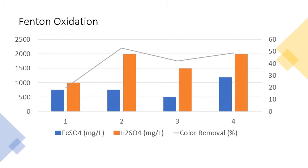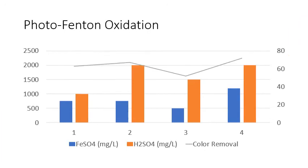For color removal, the highest color removal efficiency in Fenton oxidation was obtained in the second application. As seen in the graph, color removal efficiency increases with increasing hydrogen peroxide concentration; however, the highest color removal efficiency could not exceed 60%. Higher color removal efficiency was obtained with photo-Fenton compared to Fenton oxidation. The highest color removal efficiency was achieved with the third application, which has the same hydrogen peroxide concentration as the second application, but when cost is evaluated, the second application seems more appropriate because the color removal efficiencies are close to each other.